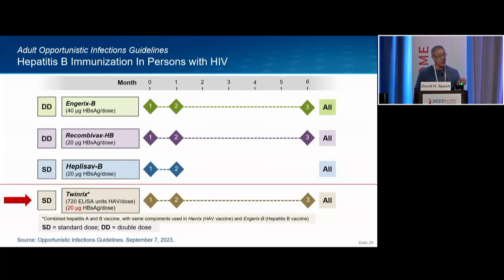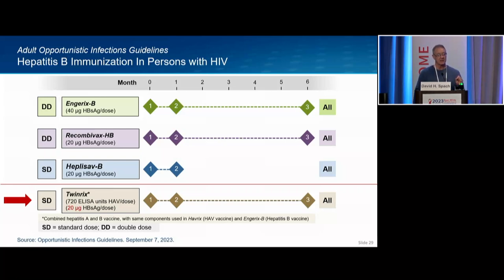One point I want to make that wasn't caught in the guidelines: Twinrix is also listed as an A2 recommendation. But if you look carefully, Twinrix has only 20 micrograms of hepatitis B surface antigen — not double dose. So you can't give Twinrix and call it double-dose Engerix-B. I personally do not think Twinrix should be considered an A2 recommendation in this context. I think this is just an inadvertent dosing oversight in the guidelines.